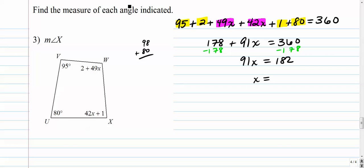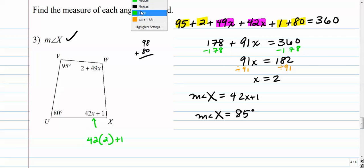And then I divide. I want to divide by 91. And I get 2. 182 divided by 91 is 2. I'm not going to circle that, because it's not really what I'm asked to do. I'm asked to find the measure of angle X, capital X. And that is equal to 42x plus 1, lowercase x plus 1. So all I really need to do here is take that 2, and I need to plug it in right here. So 42 times x plus 1, that's 84, that's 85 degrees. So the measure of angle capital X is 85 degrees. And that's what I'm going to highlight right there.